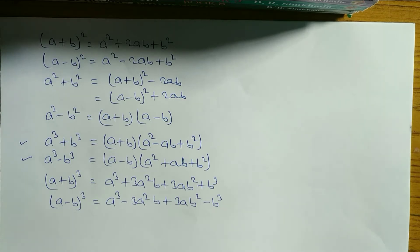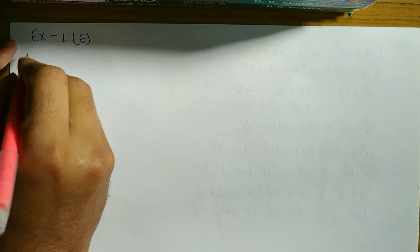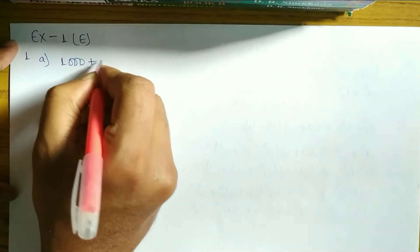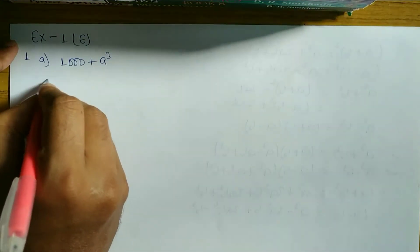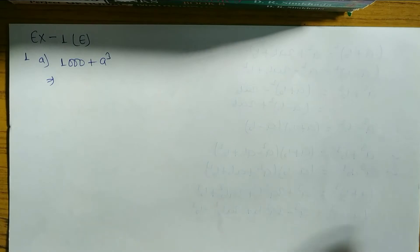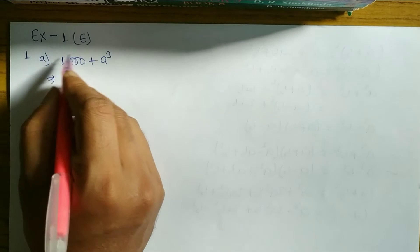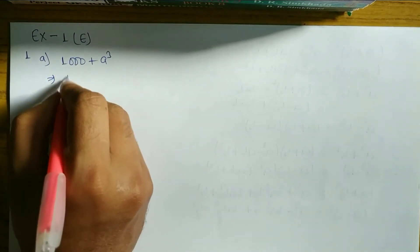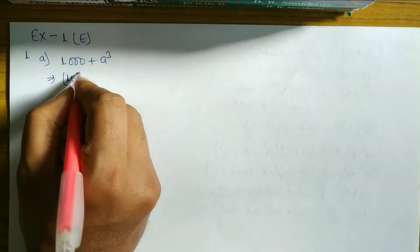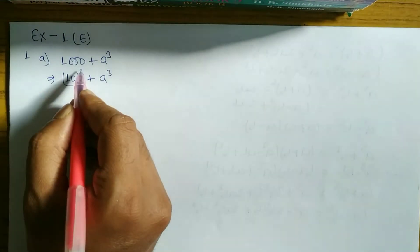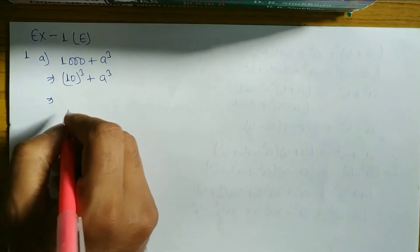Let's start Exercise 1E. Question number 1A: 1000 plus A cube. First of all, look at this question — 1000 plus A cube. We have to convert this into the form of A cube plus B cube. So 1000 we convert to 10 cube, giving us 10 cube plus A cube. This is now in the form of A cube plus B cube. What is the formula of A cube plus B cube?